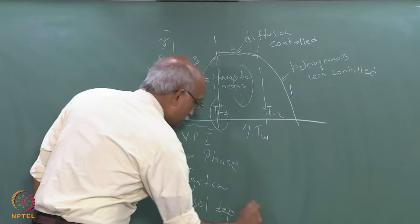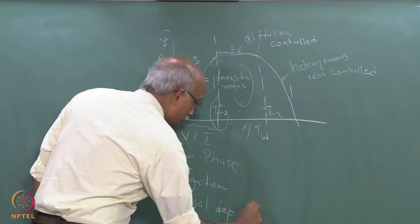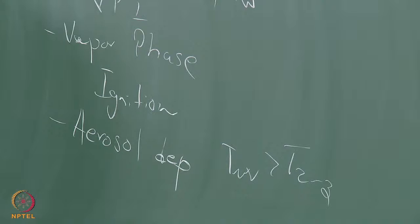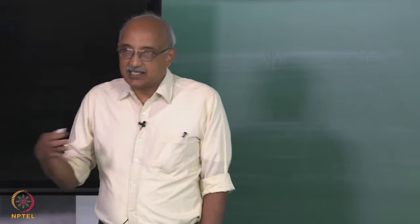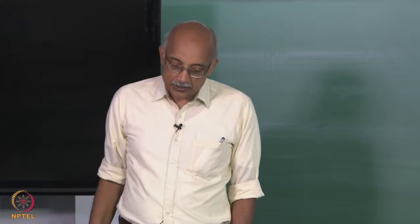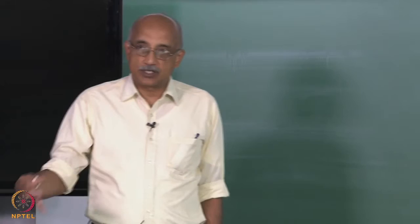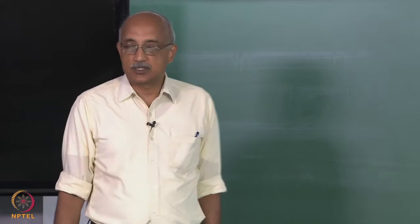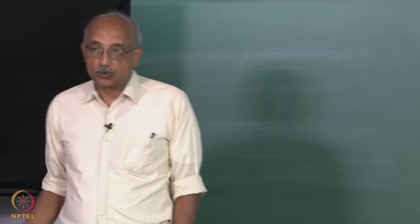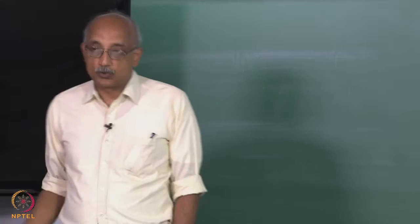If you want to operate as an aerosol CVD reactor, your wall temperature T_w must be kept above T2-3, or alternatively you seed the reactor with nucleates. The presence of an existing heterogeneous nucleus promotes formation of additional nuclei. You can disturb the equilibrium by injecting a small amount of seed aerosols to promote growth of more aerosols—just like seeding clouds to make rain possible.